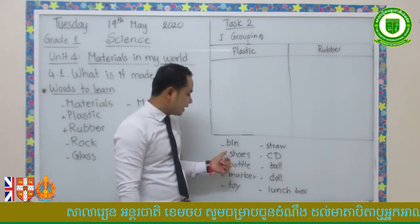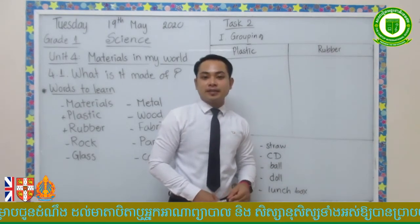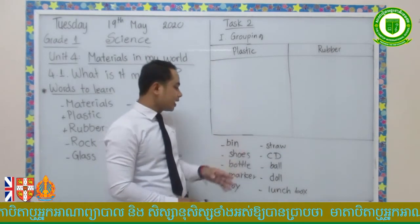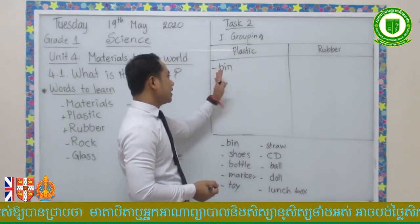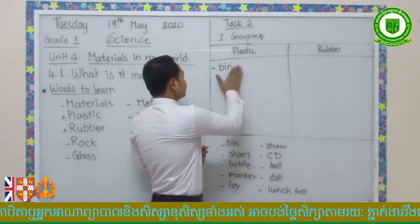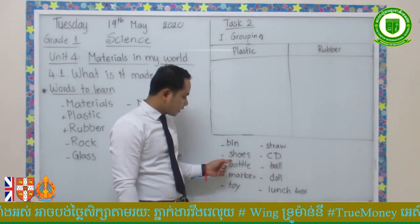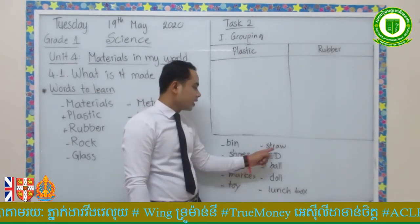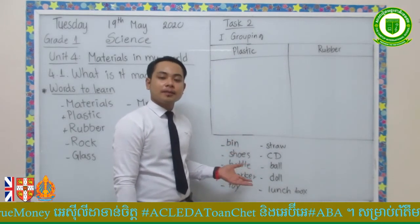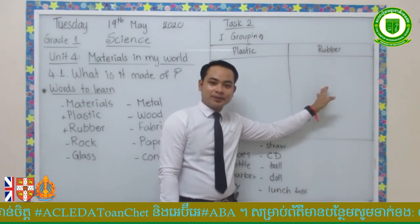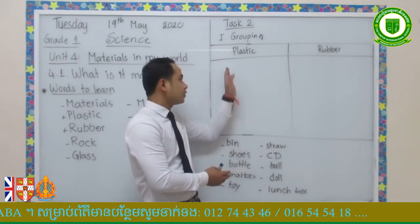We have a bin. Is a bin made of plastic or rubber? That's the bin that you always put trash in. What is it made of? If you think the bin is made of plastic, write it in the plastic column. If you think it's made of rubber, write it in the rubber column. The items to classify are: shoes, bottle, marker, toy, straw, CD, ball, doll, and lunchbox. Think about each material carefully — are they made of plastic or rubber? Decide and write them in the correct column.